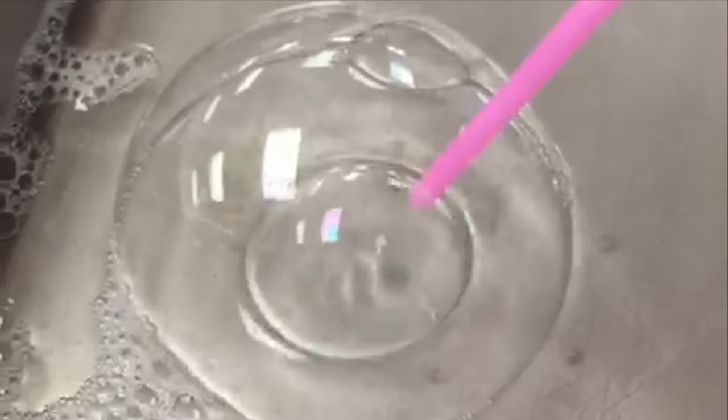The primary structure of the outer cell membrane, as well as the membranes that enclose organelles, is a double layer of phospholipids known as the phospholipid bilayer.